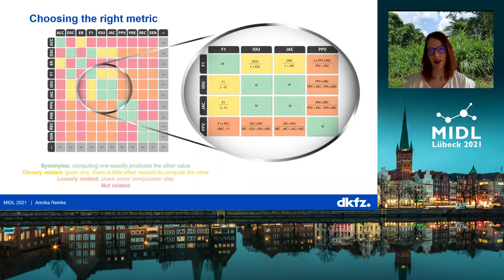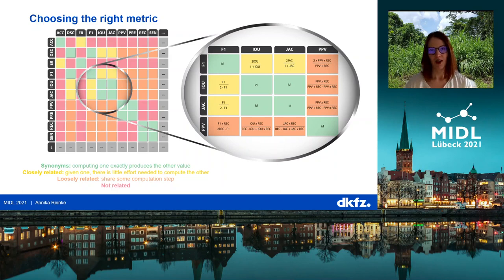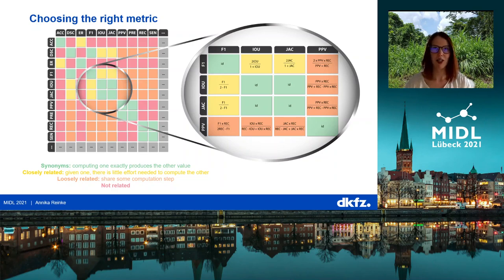Furthermore, many metrics are mathematically related. If you're using multiple metrics for validation — and we highly recommend you to do this — you shouldn't use metrics that are very similar. For example, the Dice and the IoU measure the same properties, are very similar in formulas, and will lead to the exact same ranking, so they are not adding any additional value. We are currently working on finding metrics that are very similar or dissimilar and grouping them into clusters, so you can pick metrics from different clusters and avoid using similar ones.